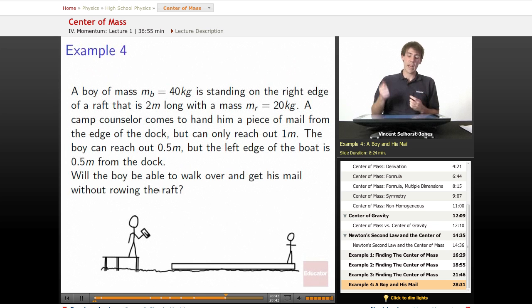A camp counselor comes to hand him a piece of mail from the edge of the dock, but he can only reach out one meter. The boy can reach out 0.5 meters, but the left edge of the boat is 0.5 meters from the dock. Will the boy be able to walk over and get his mail without rowing the raft?